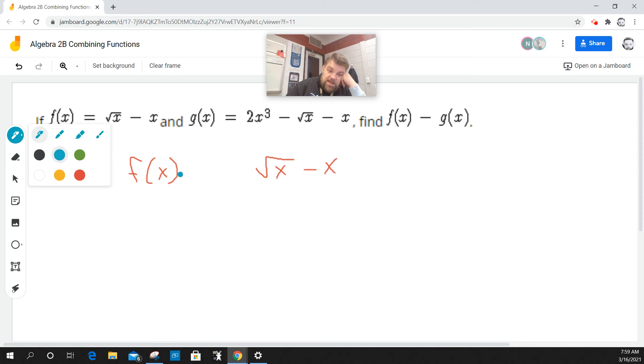And then we're going to subtract g(x) from it, which is 2x cubed minus x squared, oh, I see what, or the square root of x minus x. I see what they did.